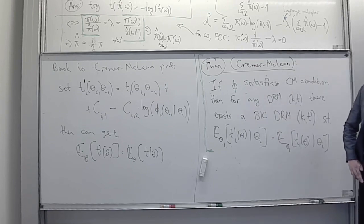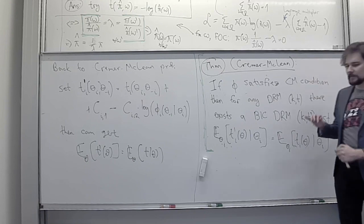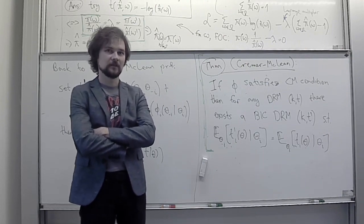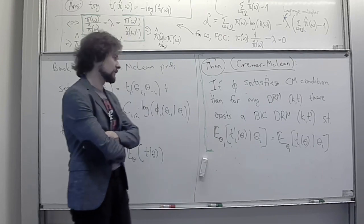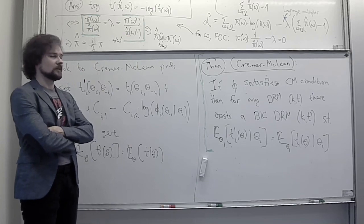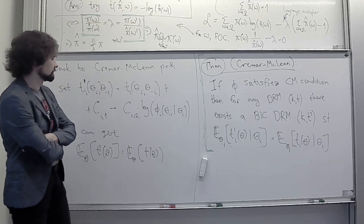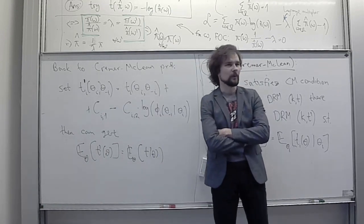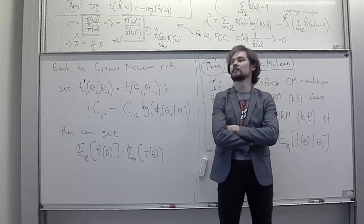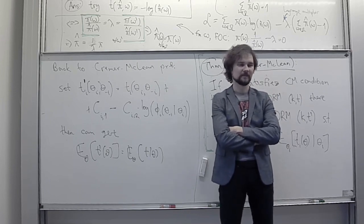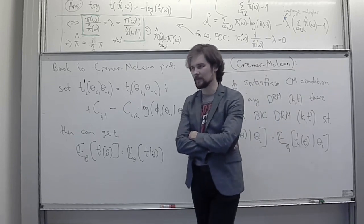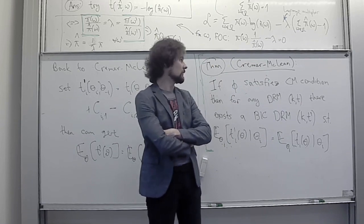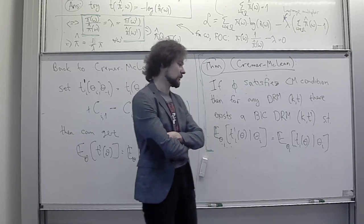That will be it for today. We covered the Cramér-McLean mechanism. To conclude: we saw that whenever players' types are correlated, it is very easy to exploit that correlation to provide incentives. We can force players to bid on each other's types, and this provides a lot of leverage for incentives. Next time we will see it goes even beyond this — we will look at a simple communication problem where the principal has no access to transfers and cannot commit to an allocation rule, yet perfect revelation is achievable.